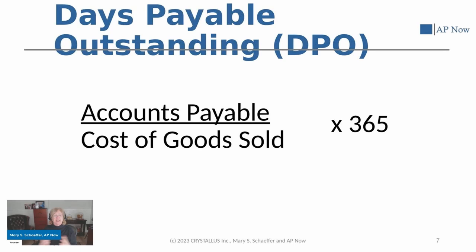To calculate DPO, let's look at the formula. It's really quite simple: you take your accounts payable balance, divide it by cost of goods sold, and then multiply it by 365.